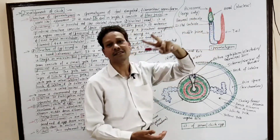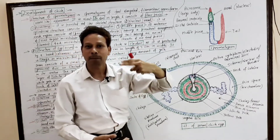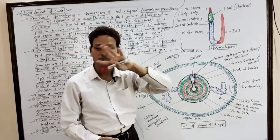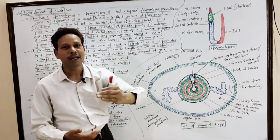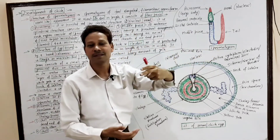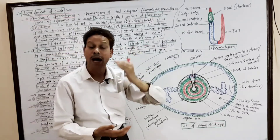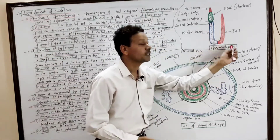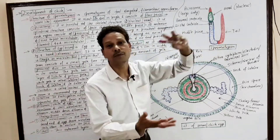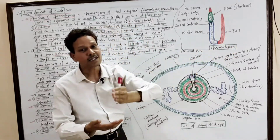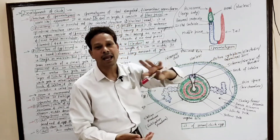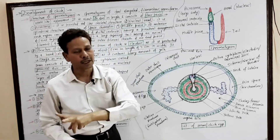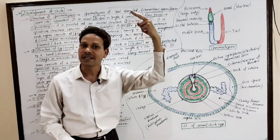The structure of both the proximal and distal centrioles is a pinwheel-like structure showing a nine-plus-zero arrangement of microtubules — nine outer peripheral microtubules in a triplet arrangement. The middle piece is the powerhouse because it consists of mitochondria, providing energy for the movements of spermatozoa. The last part is the tail, which acts as a flagellum possessing an axial filament with a nine-plus-two arrangement of microtubules — two central and nine peripheral, like cilia and flagella.